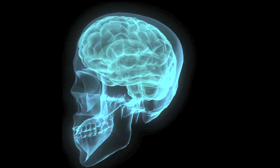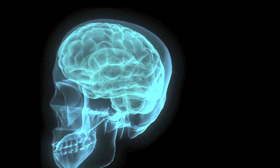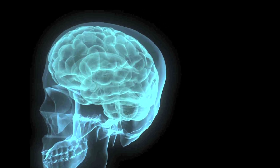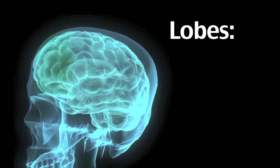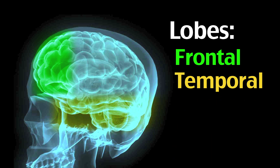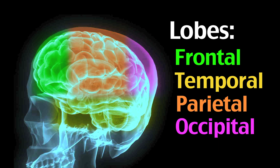The brain contains many parts, but it's organized into four main sections called lobes. They are the frontal lobe, responsible for voluntary movement; the temporal lobe, responsible for memory, emotion, and language; the parietal lobe, responsible for physical feeling; and last but not least, the occipital lobe, responsible for visual processing.